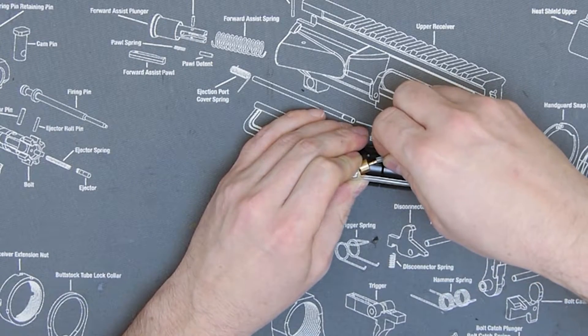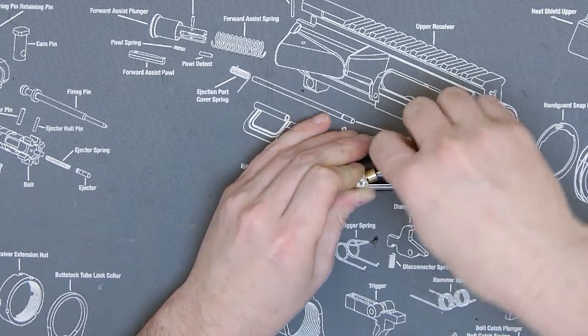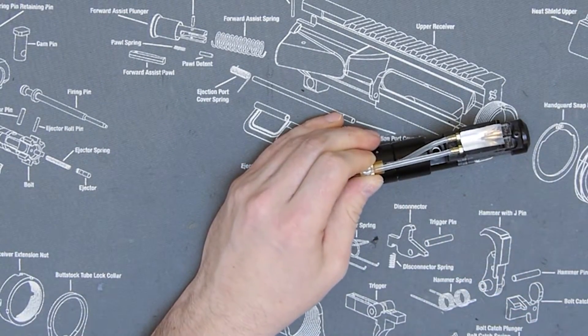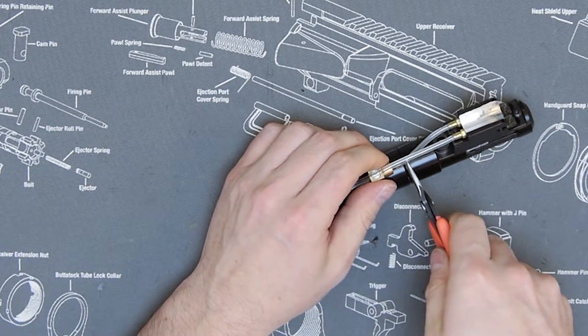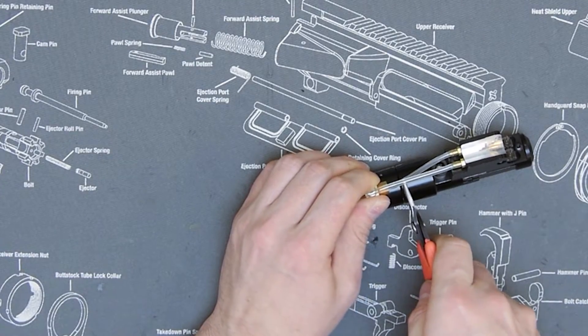Grab our pliers—this will help grab the line and force it on there and get a nice secure fit and seal.